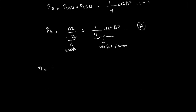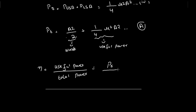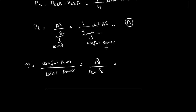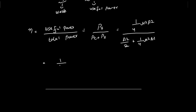To find the efficiency, we note that efficiency equals useful power divided by total power. For the amplitude modulated signal with carrier, the useful power is the sideband power P_s = μ²A²/4, and the total power is A²/2 + μ²A²/4. So efficiency equals (μ²A²/4) divided by (A²/2 + μ²A²/4).